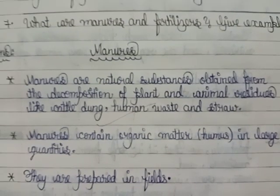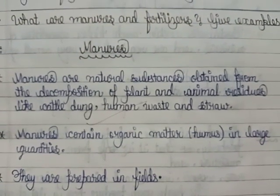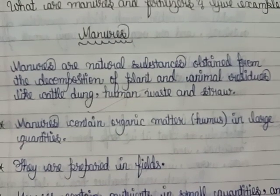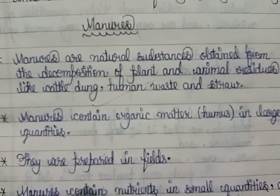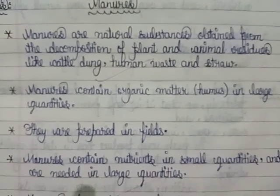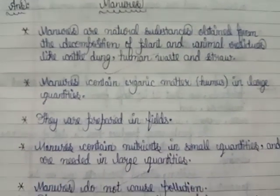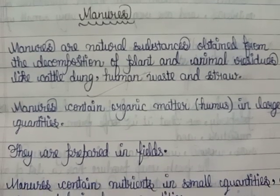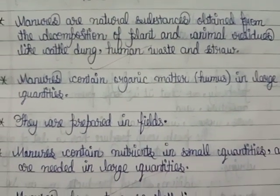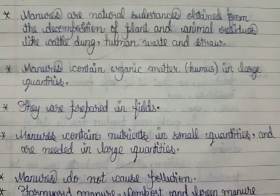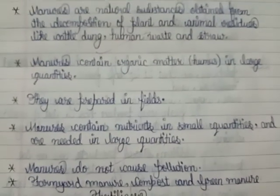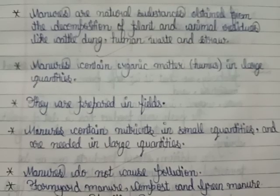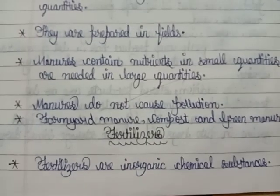Question number seven: 'What are manures and fertilizers? Give examples.' The different points about manure are given here, followed by the points on fertilizers.